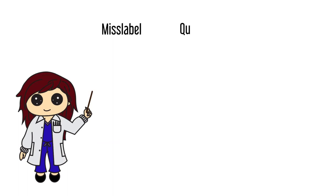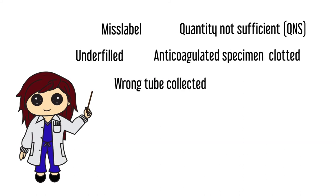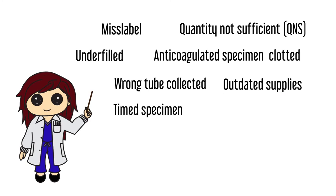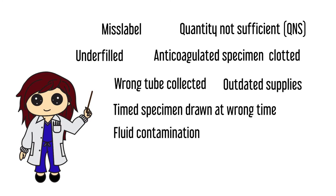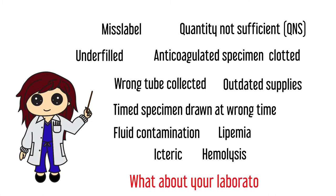That was all for today on specimen rejection criteria. Some of the rejected specimens could be preventable with a little more attention during the collection process, such as mislabel, underfill, wrong tube collection, and timed draw. However, sometimes things do not go as planned and it is beyond the phlebotomist's or nurse's control, such as a lipemia sample. Most of the time, if the specimen does not get rejected for the reasons mentioned, then it is more likely to be acceptable and processed. If there are other common reasons you would reject a specimen that I haven't mentioned, please share with us in the comment section.